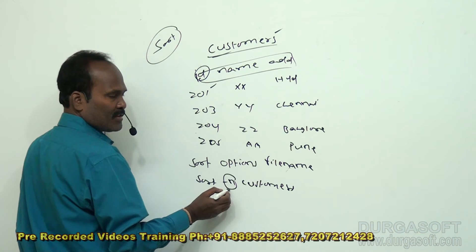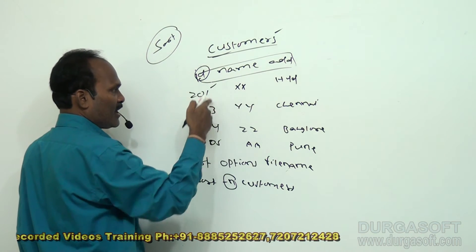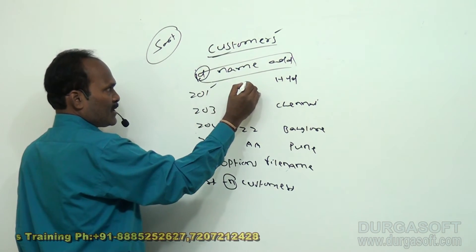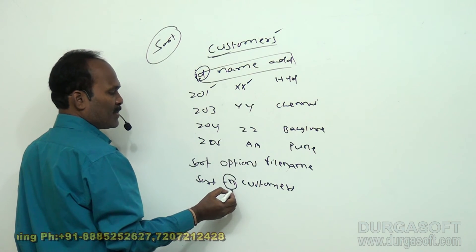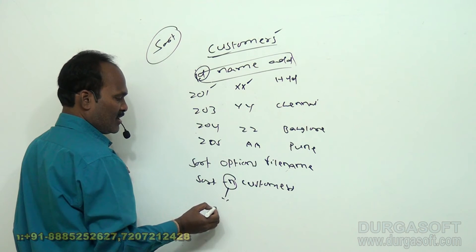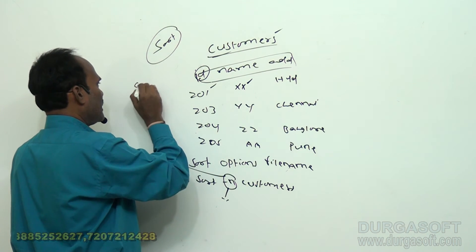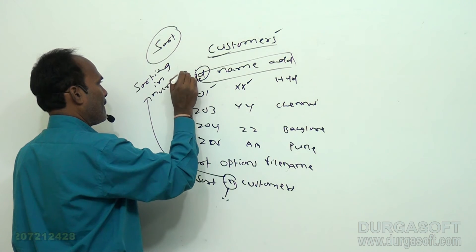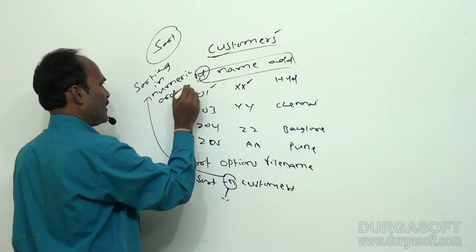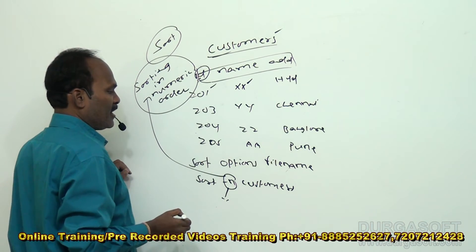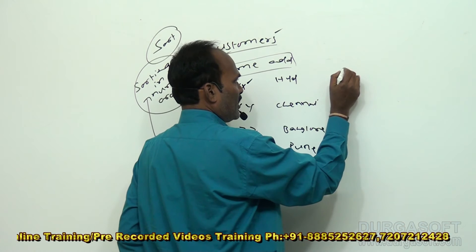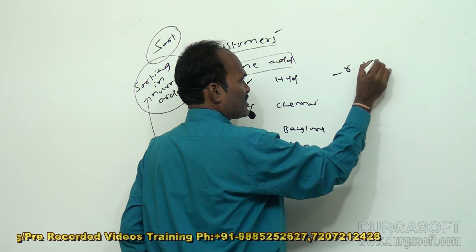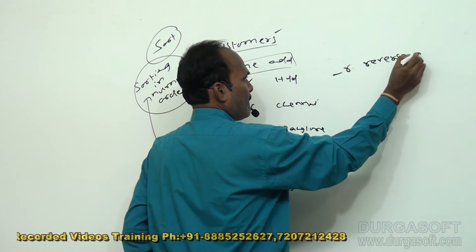The minus n option is used when you want to sort the information of a customers file in numeric order. If you want to sort the data by a different column, you may not need to supply any option. The minus n option indicates sorting in numeric order. There is also a minus r option, which sorts the information in reverse alphabetical order.